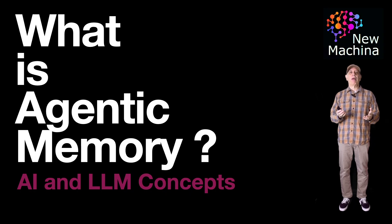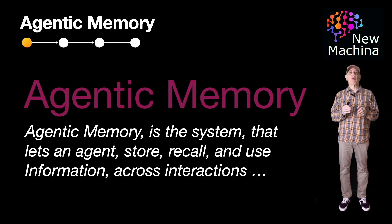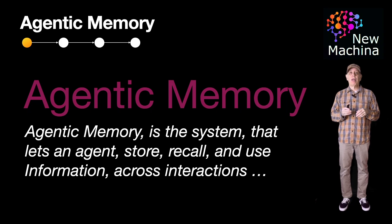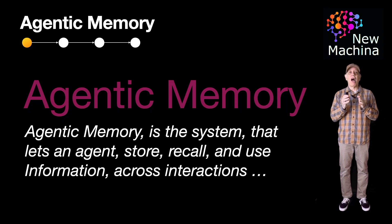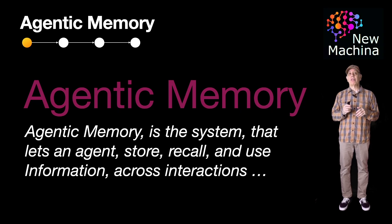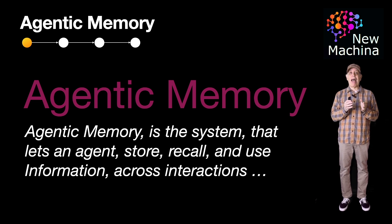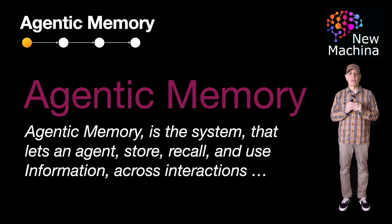So what is agentic memory? Well, agentic memory is a system that lets an agent store, recall, and use information across interactions, enabling continuity, learning, and context awareness over time. This allows LLM agents to adapt, personalize, reflect, remembering past events, facts, and decisions to guide future reasoning or actions.